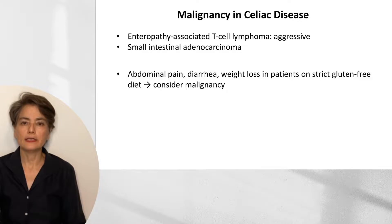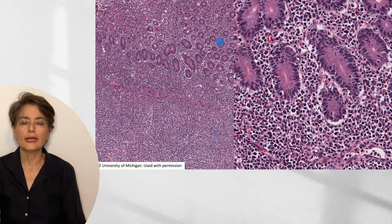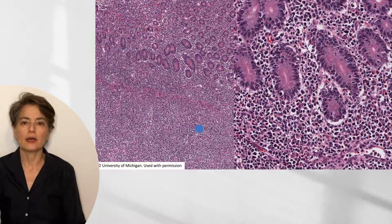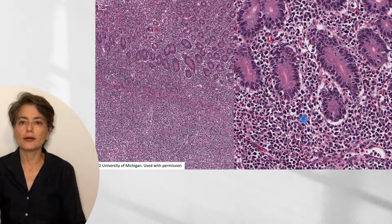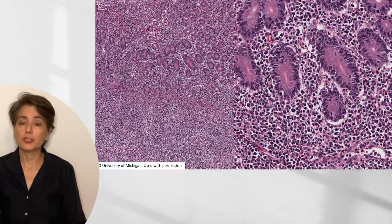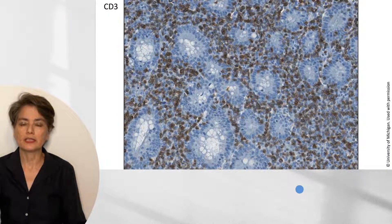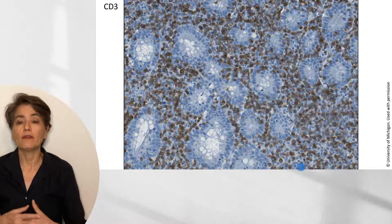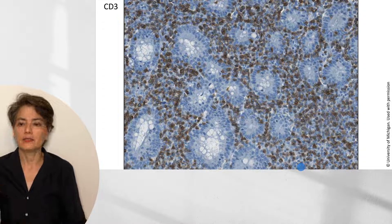Let's look at what this rare entity of enteropathy-associated T-cell lymphoma looks like. On low power, we can see small intestinal crypts, but the most prominent finding is sheets of small round cells blowing through the mucosa and lamina propria. On higher magnification, these atypical small round cells are evenly dispersed and invasive through the tissue. An immunohistochemical stain for CD3 confirms these are T-cells — it's very unusual to have sheets of T-cells in the intestinal mucosa.